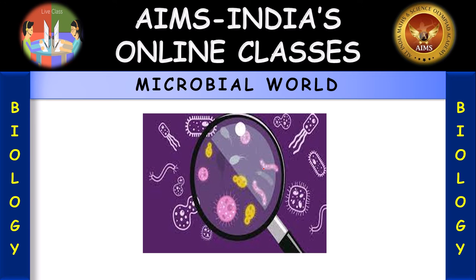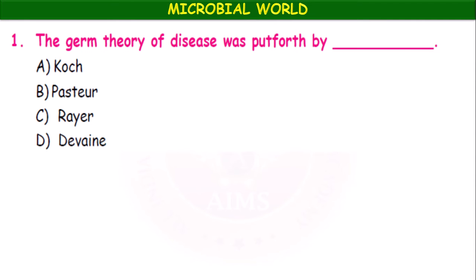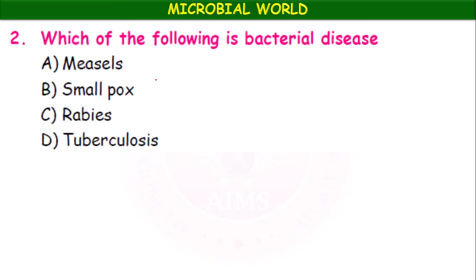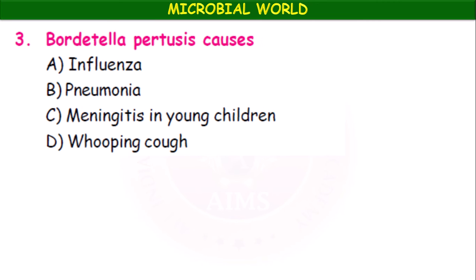Let us proceed to the questions repeated in previous examinations. Question 1: Germ theory of disease was put forth by Robert Koch, Louis Pasteur, or others? The germ theory was proposed by Louis Pasteur. Question 2: Which of the following is a bacterial disease — measles, smallpox, rabies, or tuberculosis? The first three are viral diseases. Tuberculosis (TB) is the bacterial disease.